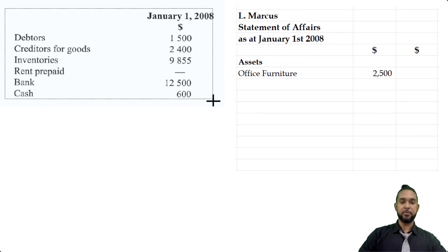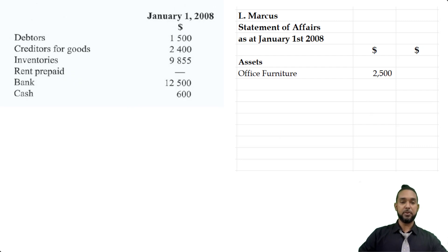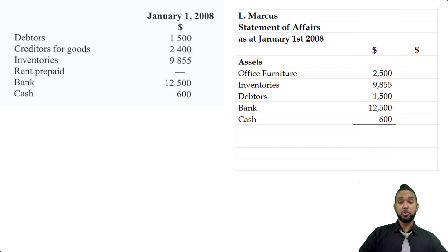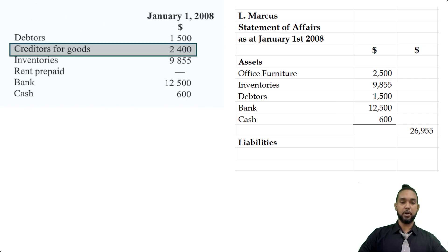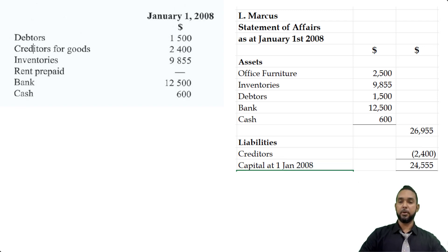From the opening balances, debtors is $1,500, inventories $98.55, bank $12,500, and cash $600 — totalling $26,955 in assets. Rent prepaid had no opening balance. For liabilities, there was only creditors for goods. Subtracting that from the asset figure gives us capital at January 1st 2008 of $24,555. That's it for Part A.